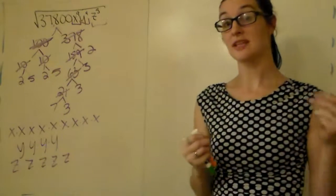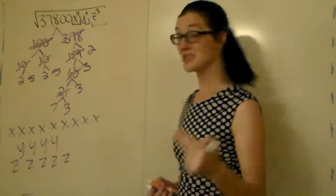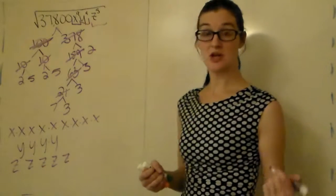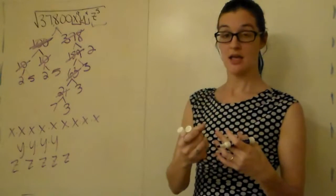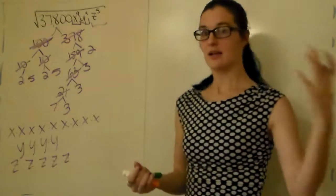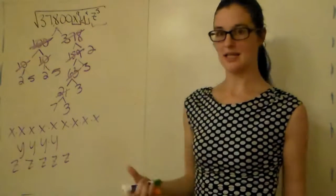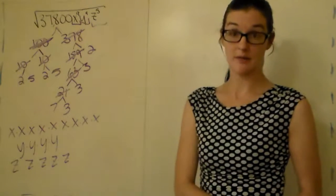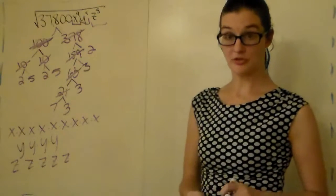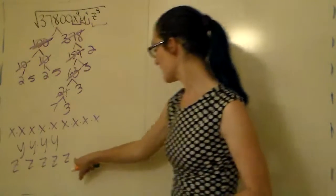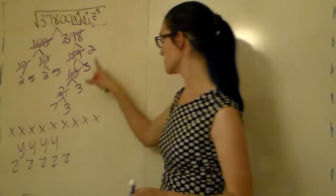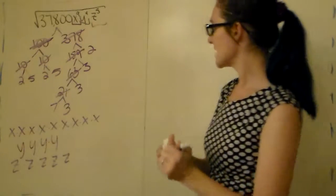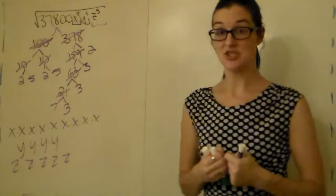Make sure your z's do not look like twos — I have a lot of students that can't read their own handwriting and it causes mistakes on tests. I put a little bar through my z's so they don't look the same as my twos. So what we're going to do next — again there are many different ways to explain it, and this is just my favorite way.